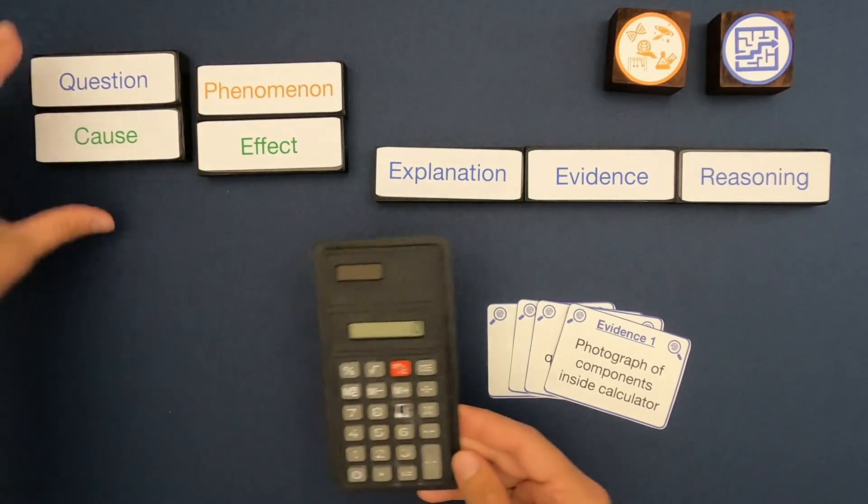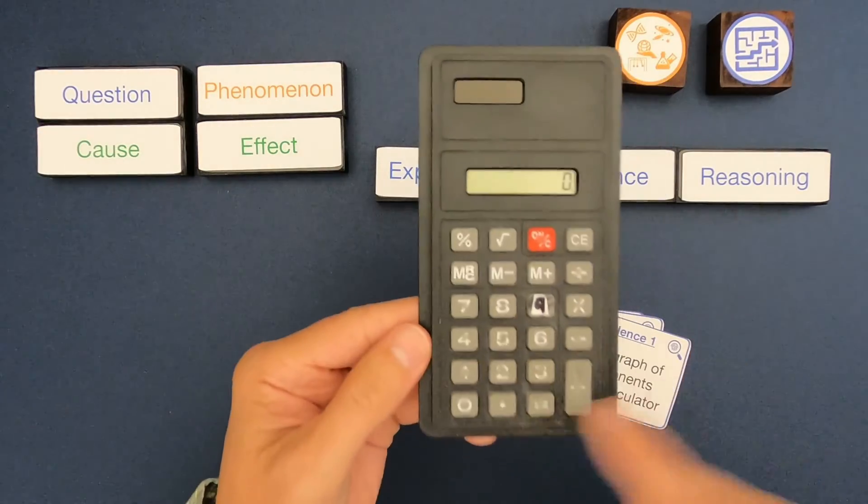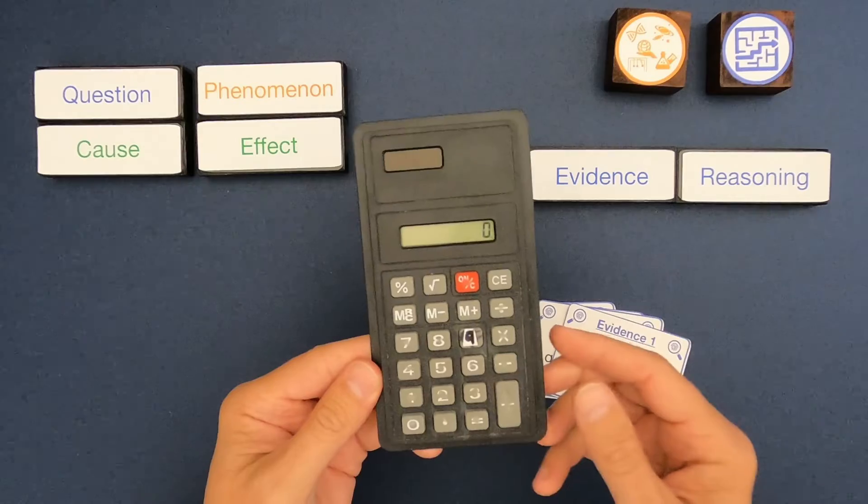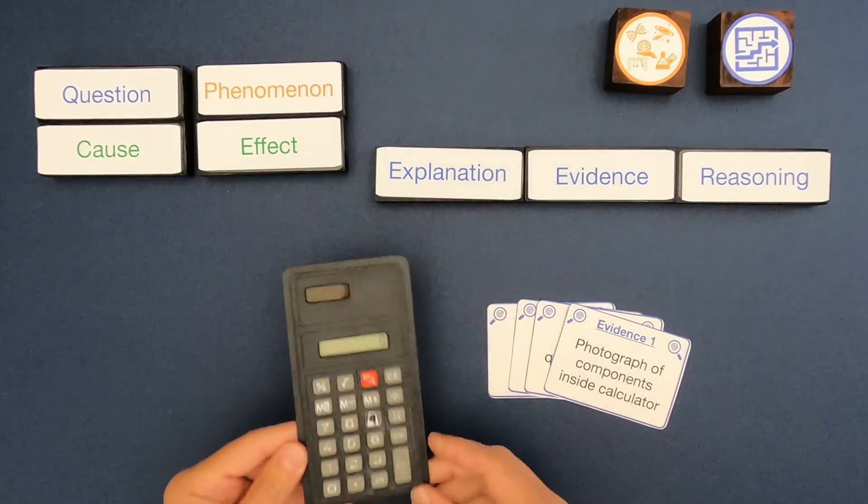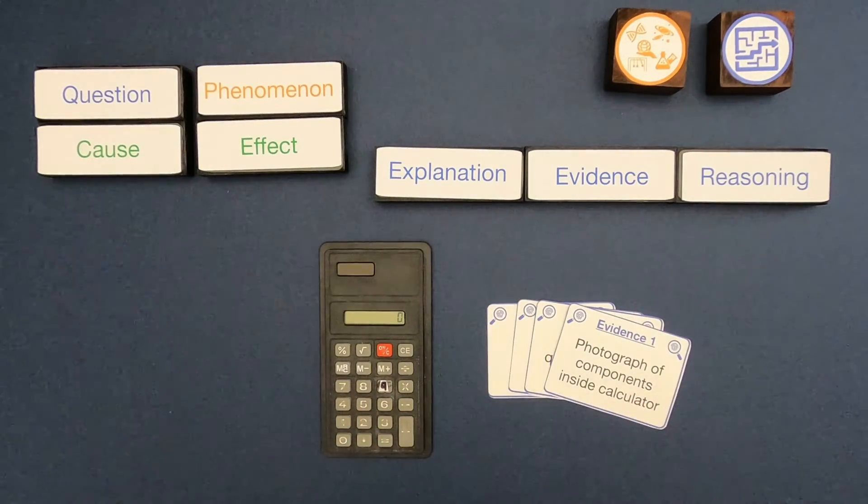For the next phenomenon we have a calculator that's been used quite a bit. You can see a lot of wear. There's also some important evidence on the back of the calculator and other evidence here, so I'll include that down below. What I'd encourage you to do is pause the video, go through, and you do some evidence-based reasoning. Go through and sort out what's important evidence, and then identify an explanation and some reasoning.